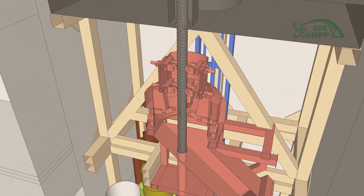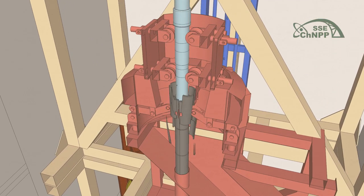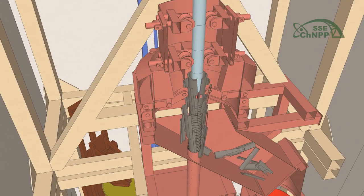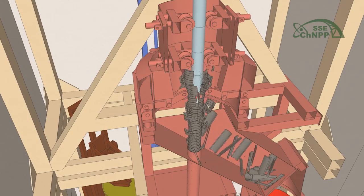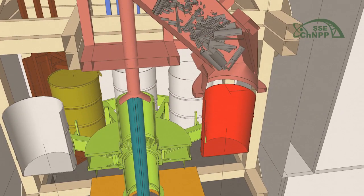Prior to cutting, fuel channels and control and protection system channels are placed in a unit for removal of graphite rings and sleeves. The removed graphite parts arrive inside a metering hopper and graphite is measured before being loaded into drums.